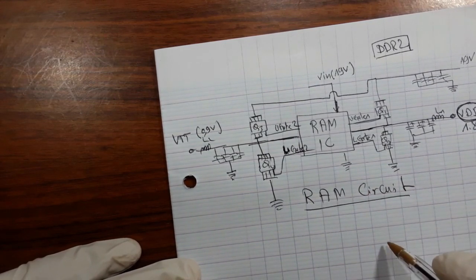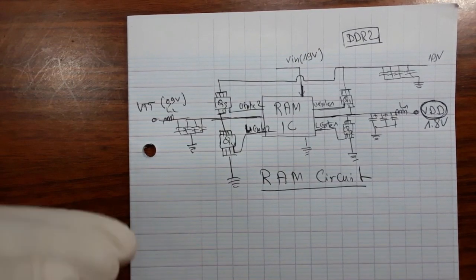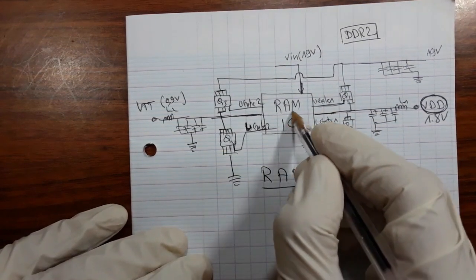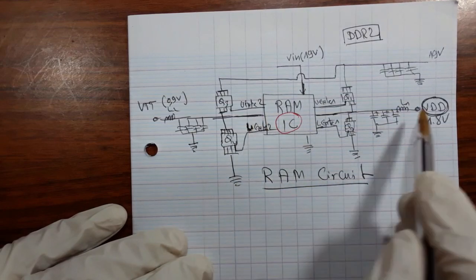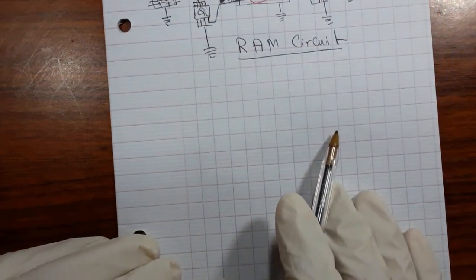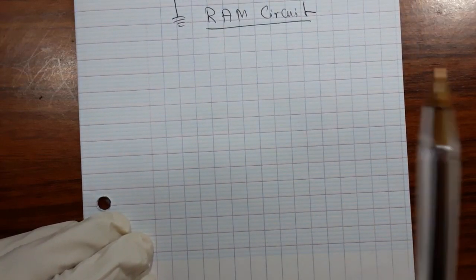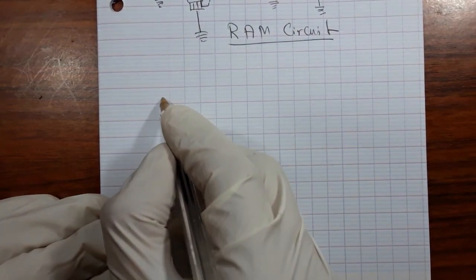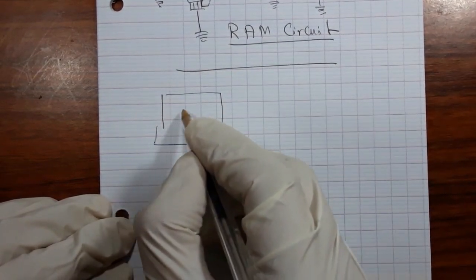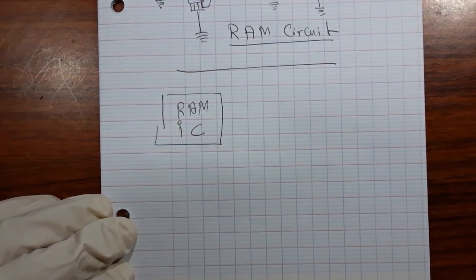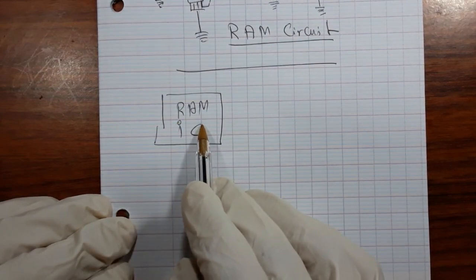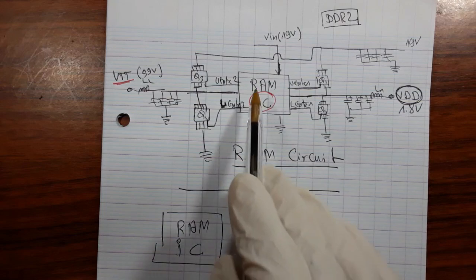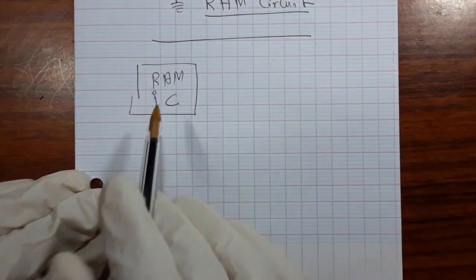This is the RAM circuit found in every desktop motherboard. Sometimes we find just one IC, as in our example here — it generates both VDD and VTT. But you can also find some motherboards that use two ICs to generate VDD and VTT separately. In that case the RAM ICs have different references.